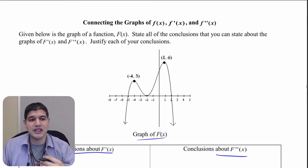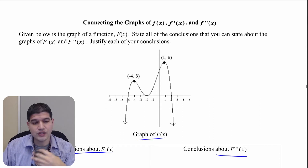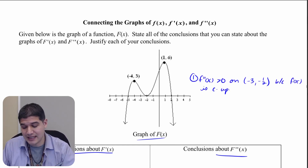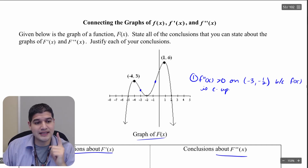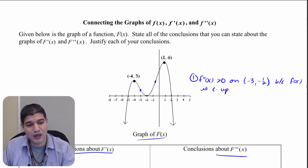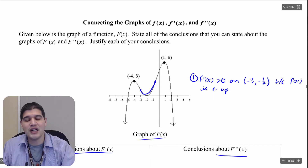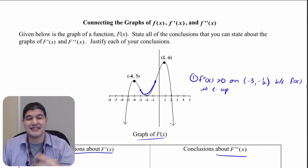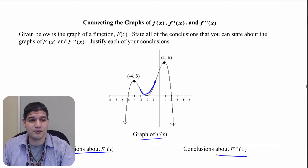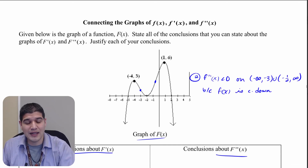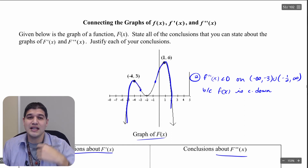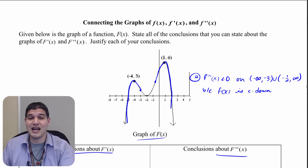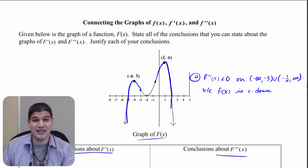Now let's make conclusions about the second derivative. Between negative 3 and about negative one-half, the second derivative is greater than zero because f is concave up — concave up means the second derivative is positive. On the intervals from negative infinity to negative 3 and from negative one-half to positive infinity, since f is concave down, the second derivative is going to be negative.